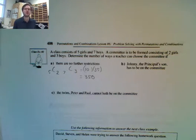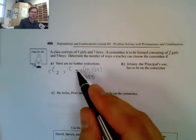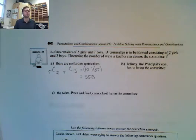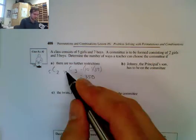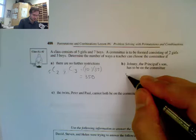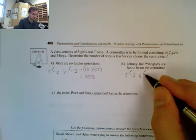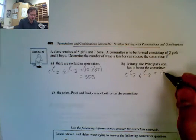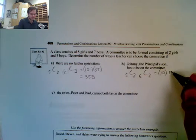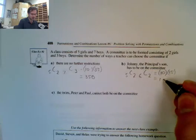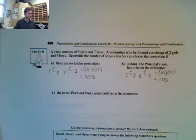Part B says Johnny the principal's son has to be on the committee. If Johnny is on the committee, now we can only take a total of 2 boys because one's already there, and there's one last boy to choose from. Out of 5 girls, we are choosing 2, and out of 6 boys, we are choosing 2, which gives me 10 multiplied by 15, which is 150.